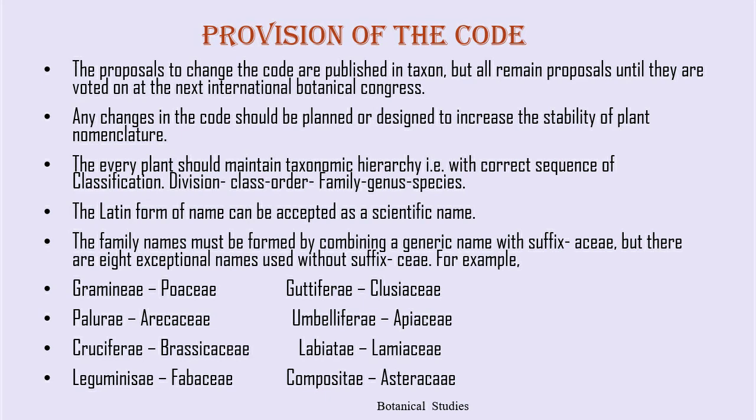However, there are 8 exceptional names used without the suffix '-aceae': Gramineae (Poaceae), Guttiferae (Clusiaceae), Palmae (Arecaceae), Umbelliferae (Apiaceae), Cruciferae (Brassicaceae), Labiatae (Lamiaceae), Leguminosae (Fabaceae), and Compositae (Asteraceae).